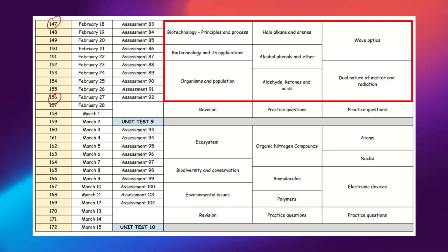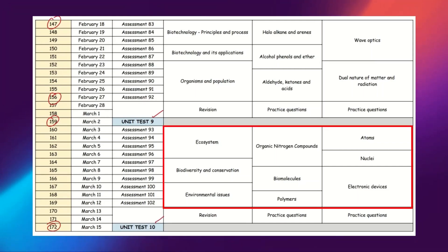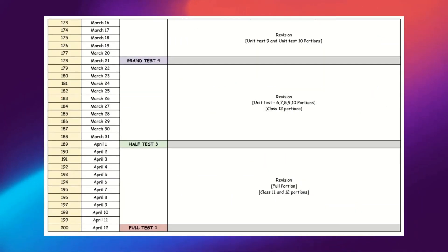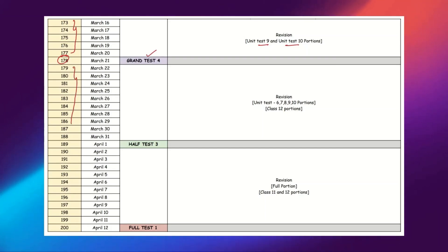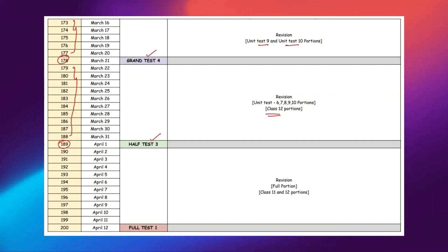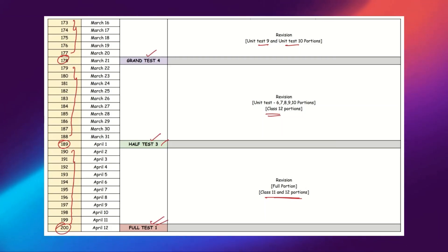From Day 147 to Day 156 you study Part 9 syllabus and write Unit Test 9 on Day 159. You write Unit Test 10 on Day 172 for Part 10 syllabus. Then you get five days to revise Parts 9 and 10 and write Grand Test 4 on Day 178. After that you get 10 days to revise Class 12 portions and write Half-Syllabus Test 3 on Day 189. Finally, after a 10-day full-syllabus revision, on Day 200 you write the Full-Syllabus Test.